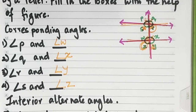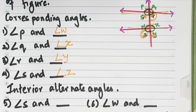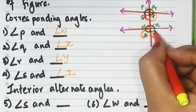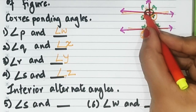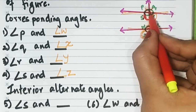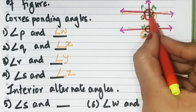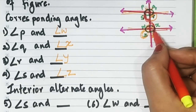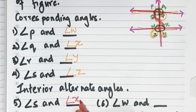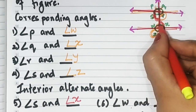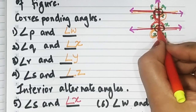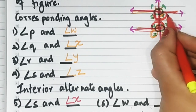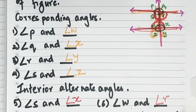The next part asks for interior alternate angles. For angle S, using the letter Z, the alternate angle is angle X. For angle W, forming a Z gives us angle R. So angle S pairs with angle X, and angle W pairs with angle R as interior alternate angles.